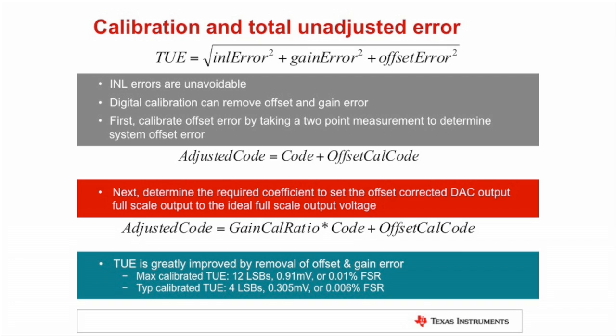This term may be positive or negative and will be added to the adjusted code. Next, using the data from the same two-point measurement, we can apply a gain correction coefficient to correct the DAC gain error.